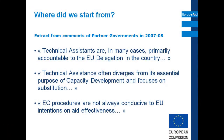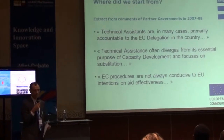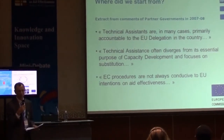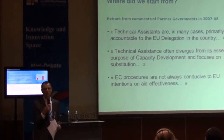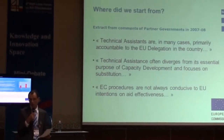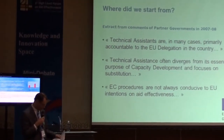Where were we when we started the reform? Some quotations: technical assistance diverges from capacity development and focuses on substitution. We should not oversimplify — when there is pressure for results, substitution is a natural reflex. But it's a confusion of objectives, often for both parties, including the beneficiary of the partner country who was satisfied to see the job done.